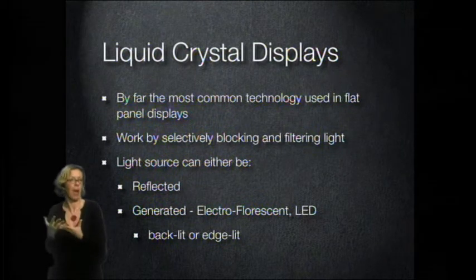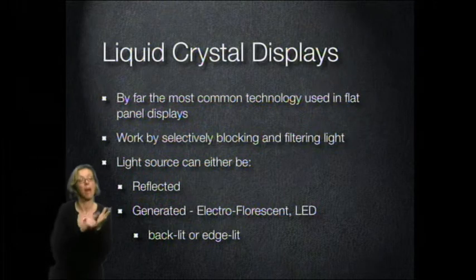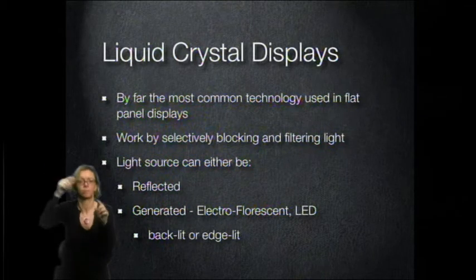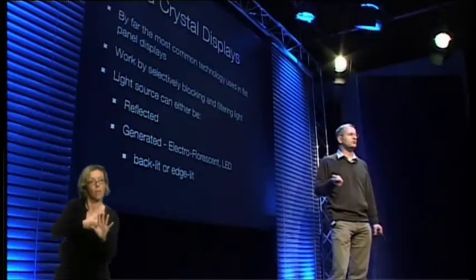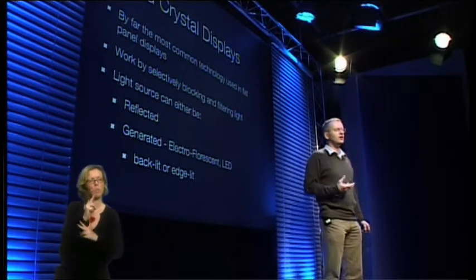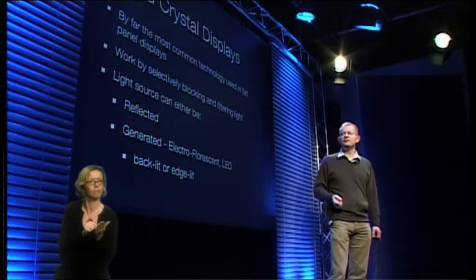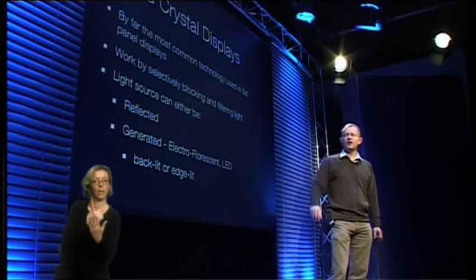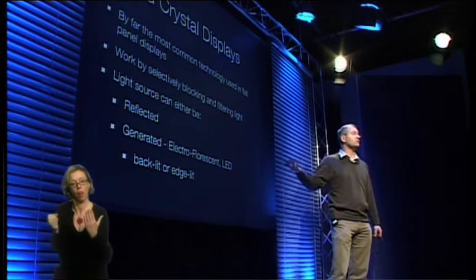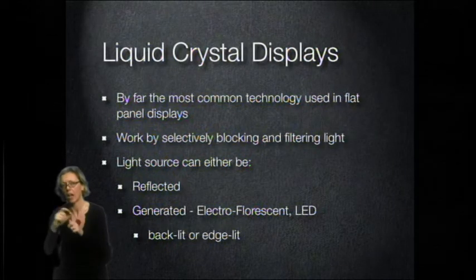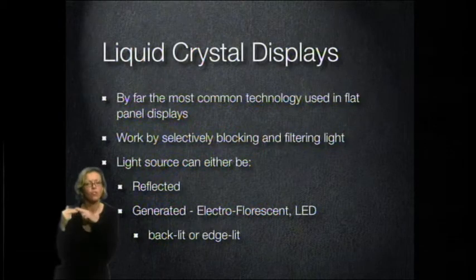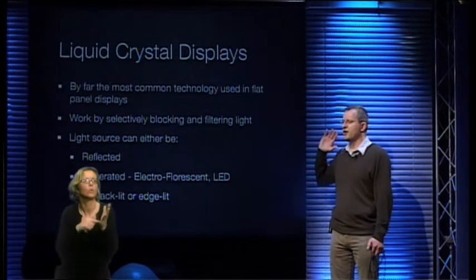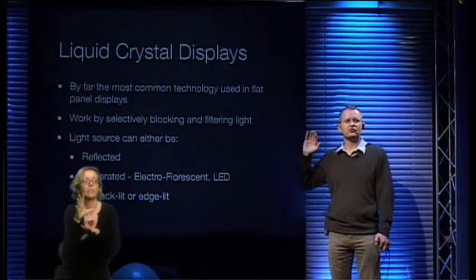LCDs work by selectively blocking and filtering light — letting light through or not letting light through. Generally that's because they have a light source at the back, which can either be reflective — which is what you get with very cheap calculators, where you're relying on external light via a mirror at the back — or more commonly by some kind of back or edge-lit source, generally LEDs. On a lot of modern LCDs it's an LED light, but traditionally it would be some kind of electrofluorescent light, a bit like fluorescent tubes. What you're producing is a bright white even light at the back of your display, and then you're selectively stopping it.